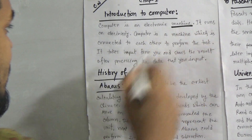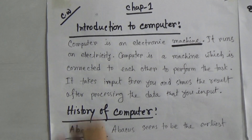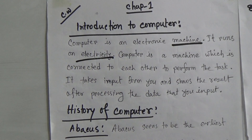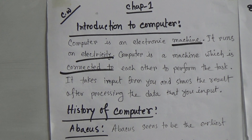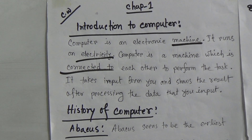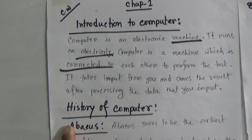Computer is an electronic machine. Students, you have to note that and underline this. Computer is an electronic machine — it runs on electricity. Computer is a machine which is connected to each other to perform tasks. It takes input from you and shows the result after processing the data that you input. This is the function of a computer.